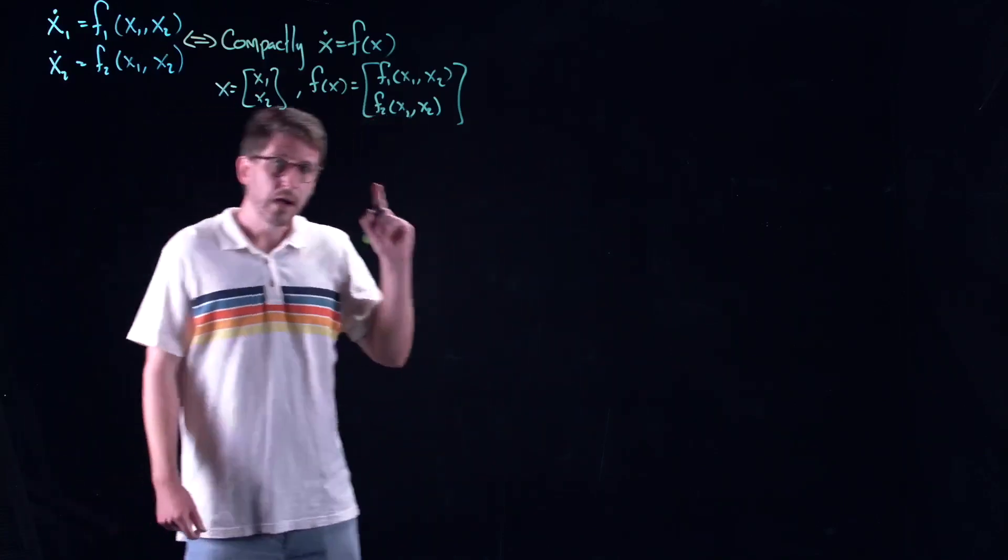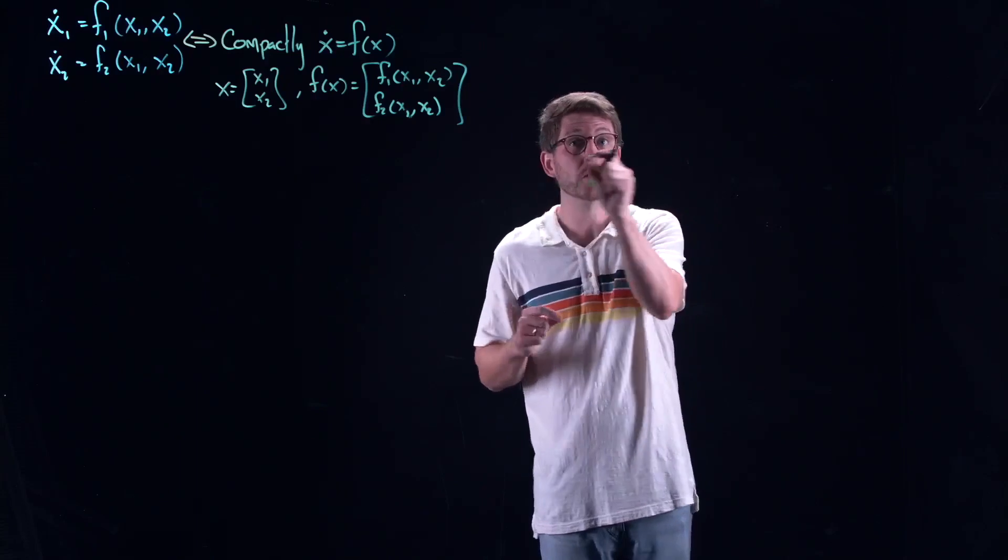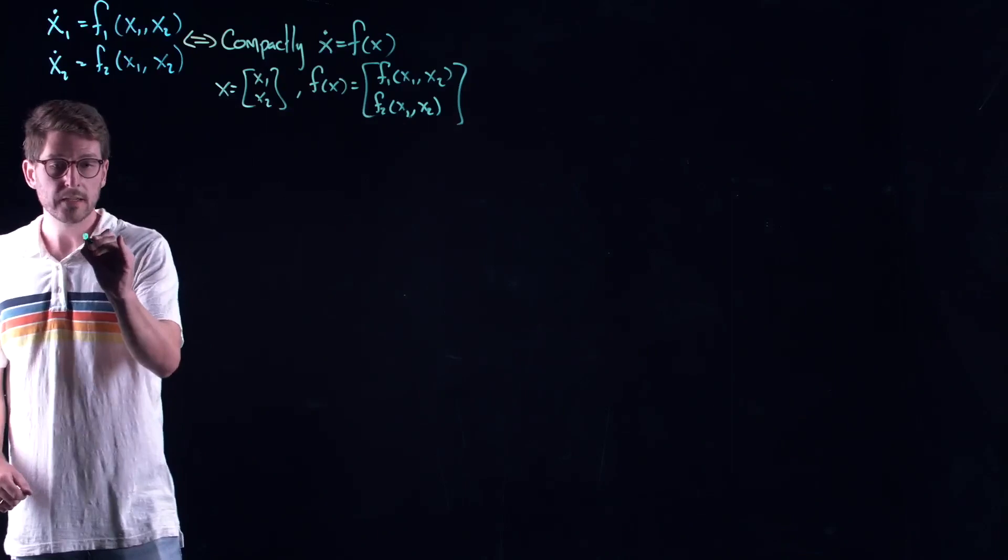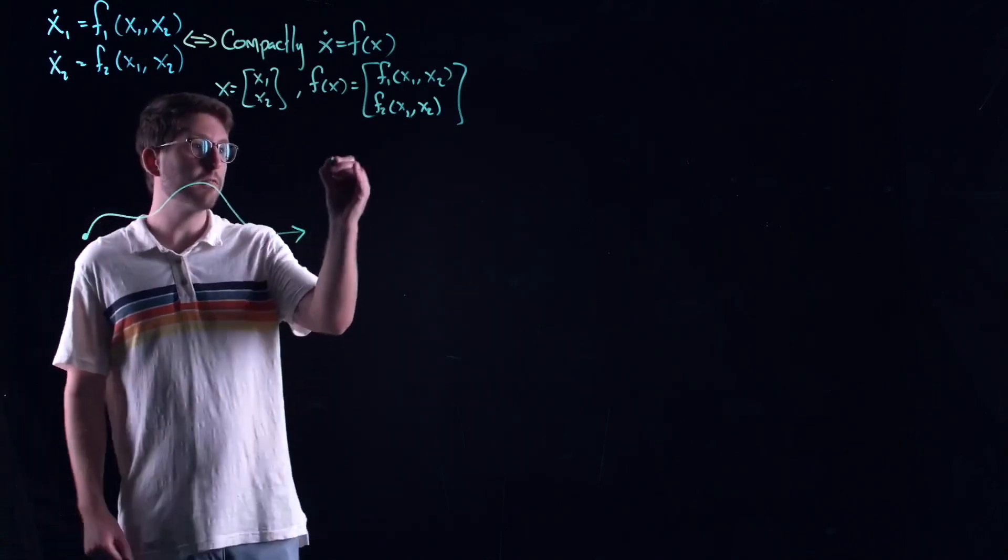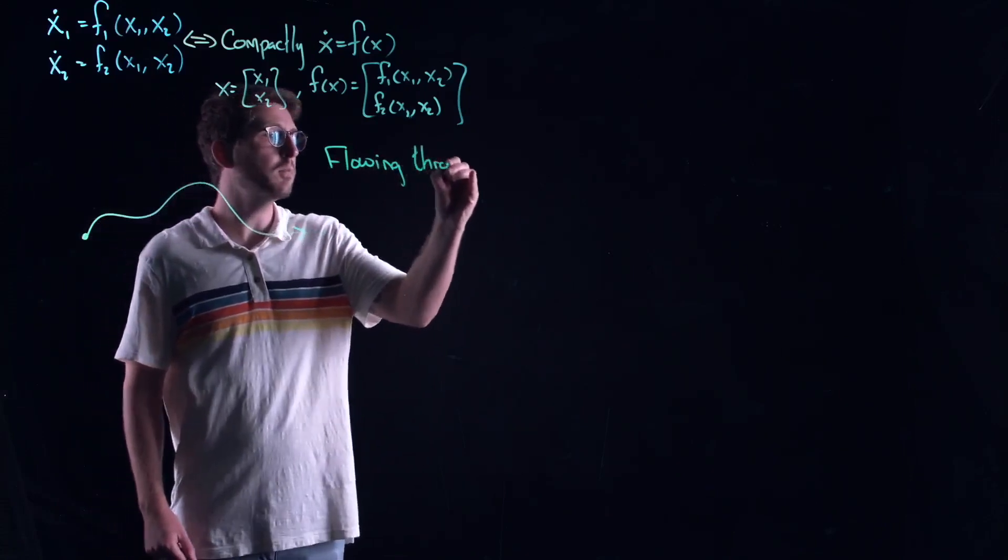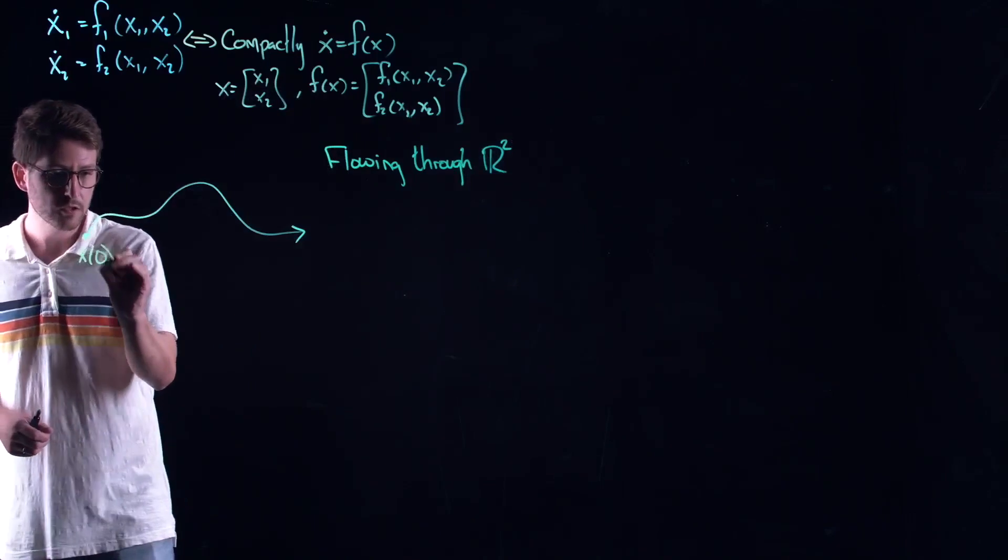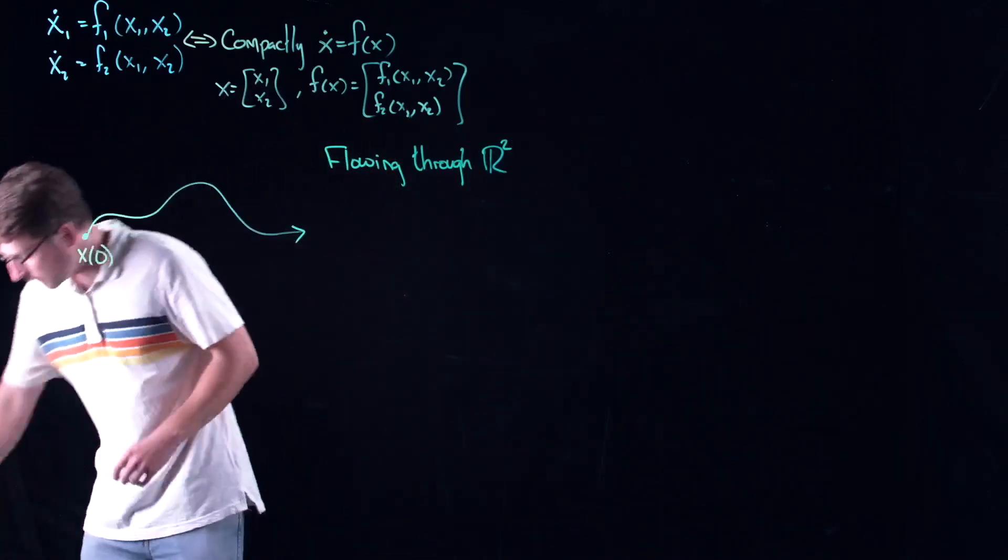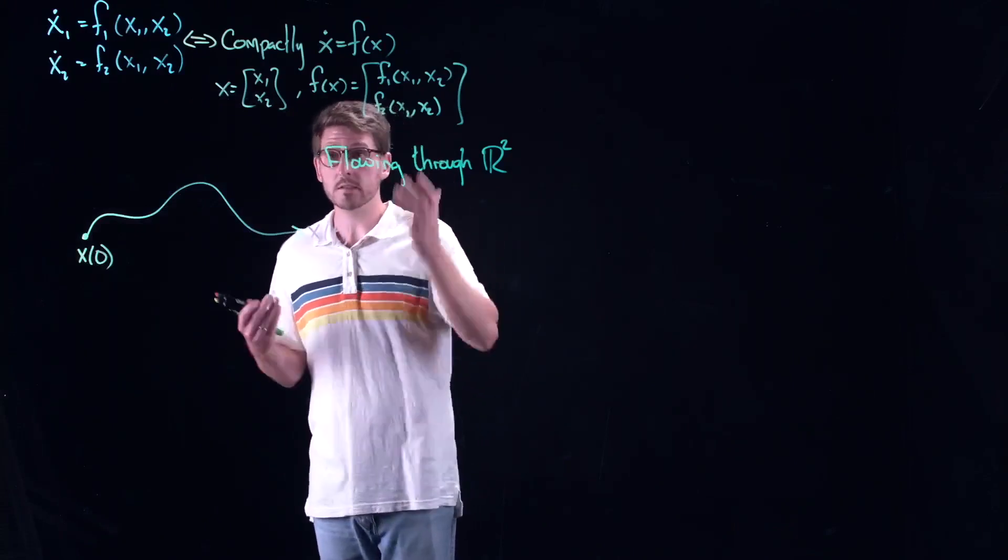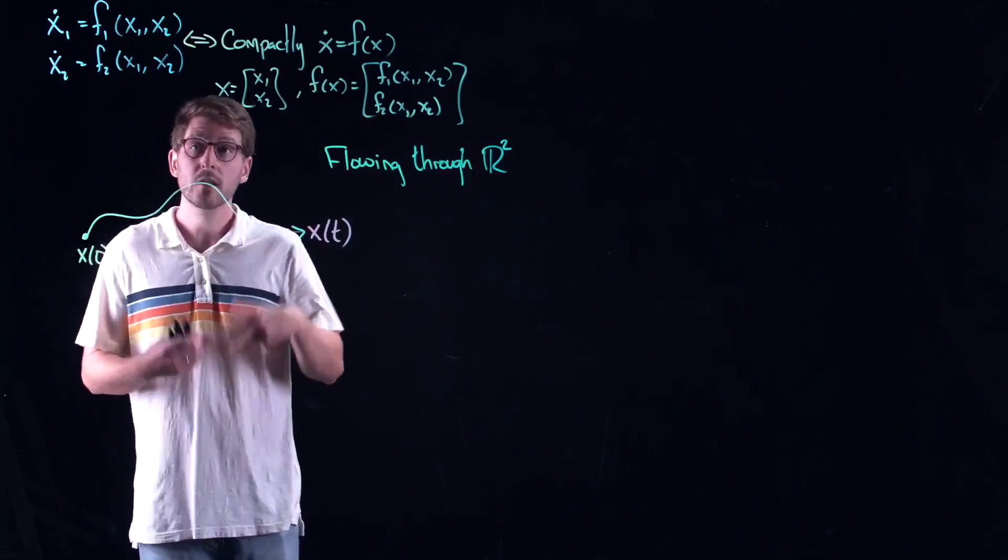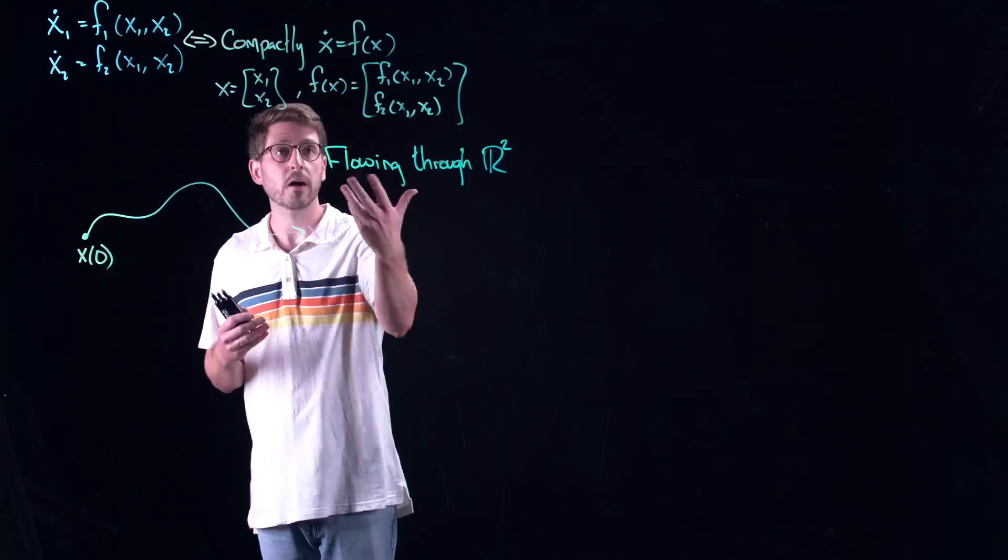I'm just going to write it as x1 and x2. The only reason I want to use x1 and x2 is because this allows me to write it compactly. I just want to write it as x dot equal to f of x, where x is equal to x1, x2, and f of x is this vector valued function. This is a typical thing that we do in dynamical systems.